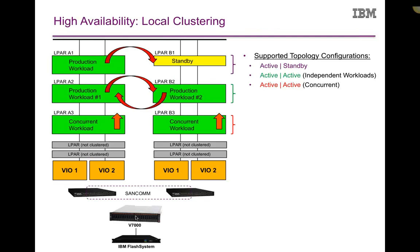As far as local cluster setups, we typically configure either an active-standby configuration, a mutual takeover config where LPARs A2 and B2 provide protection for each other, or active-active configurations. We support active-active in a concurrent fashion — if you put a volume group in a concurrent resource group, meaning it's online on all nodes, we only support it where there are no file systems inside of that volume group. You would only be able to play with raw logical volumes.